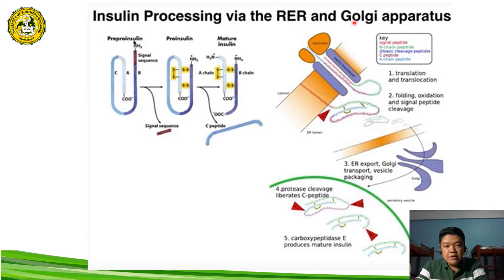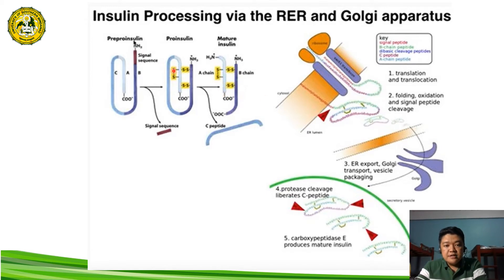In the formation of the proinsulin, the signal sequence is cleaved in the lumen of the endoplasmic reticulum through a protease enzyme, so the signal peptide is absent. The oxidation process refers to the formation of the disulfide bridges, which are the bonds linking the A chain and the B chain of our insulin.